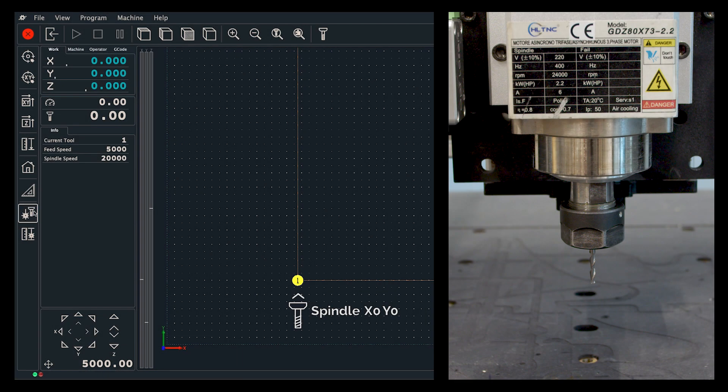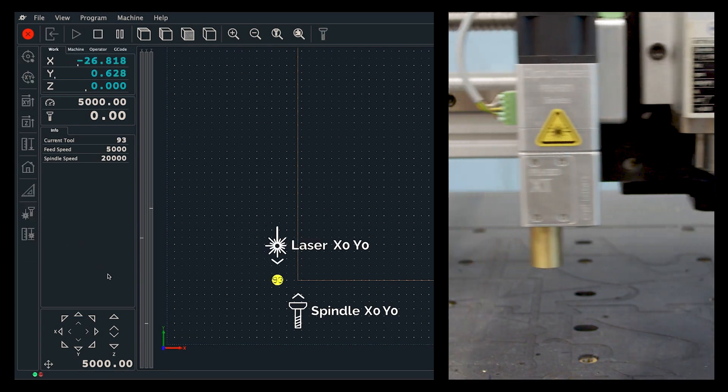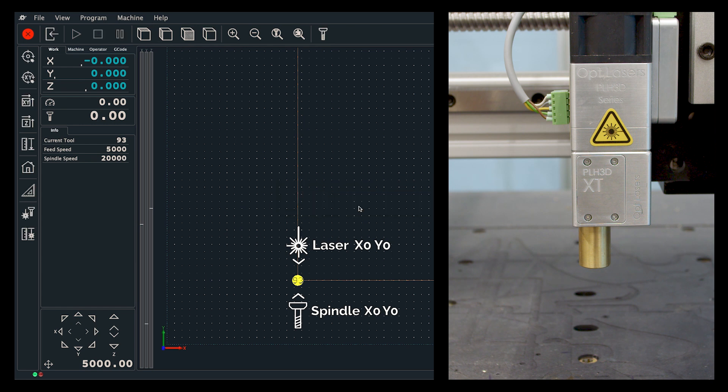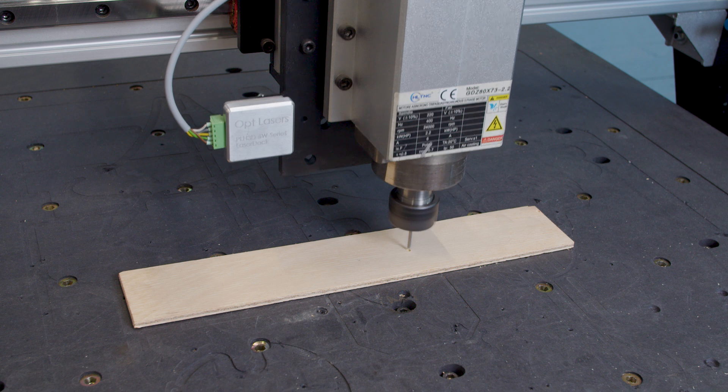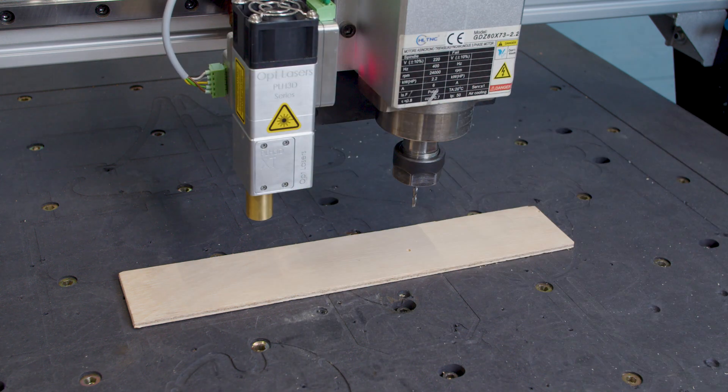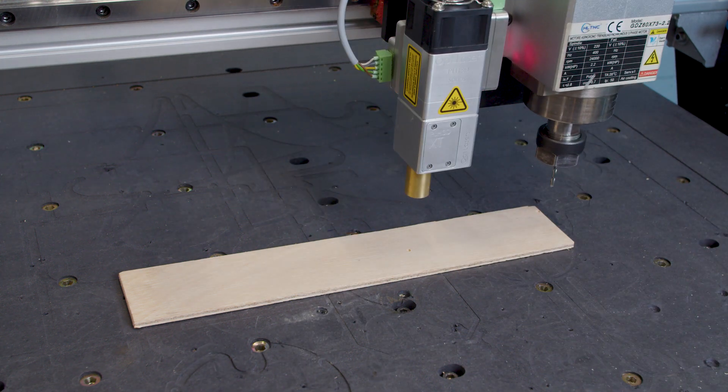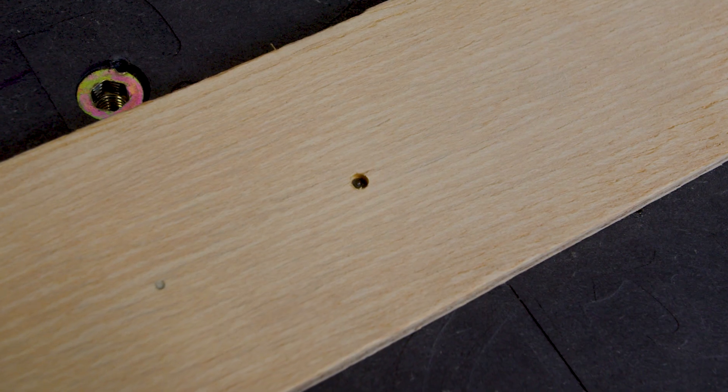When you press the button, you will also notice that the machine moves the laser head to the last XY working coordinate of the spindle. This allows you to keep the exact same reference from a part that you were milling before. No need to redefine the zero XY coordinates.